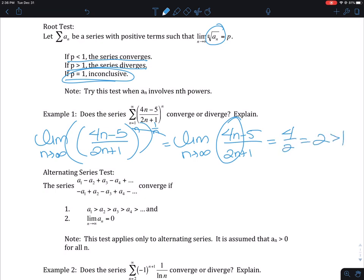2 is bigger than 1, so this series diverges by the root test. I would want you to actually rewrite this out and don't draw this arrow, but I ran out of room down here, so that's the only reason why I'm doing it.